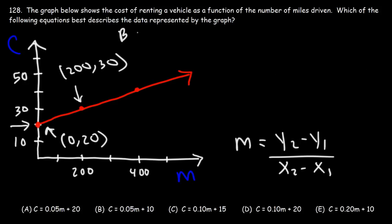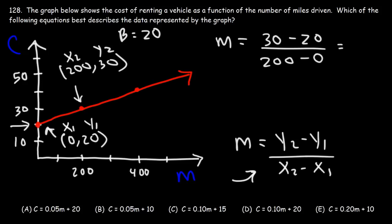Using these two points, we can calculate the slope. But keep in mind that b is 20. So we're going to call this x2 and y2. This is going to be x1 and y1. Now let's plug it into that formula. y2 is 30, y1 is 20, x2 is 200, x1 is 0. So we have 30 minus 20, which is 10, over 200. Now we can cancel a zero. So this is 1 over 20. 1 divided by 20 is 0.05.